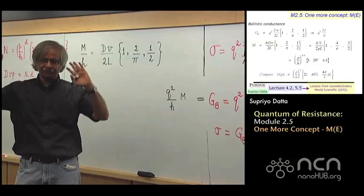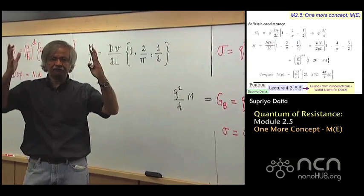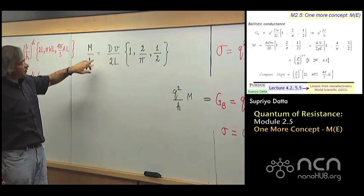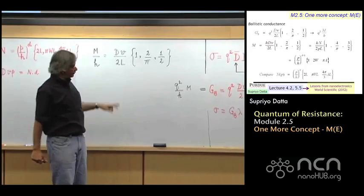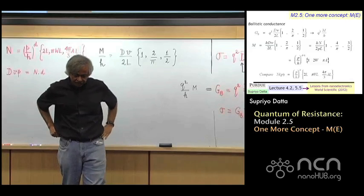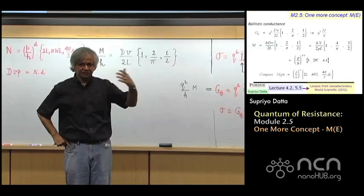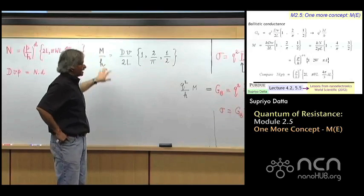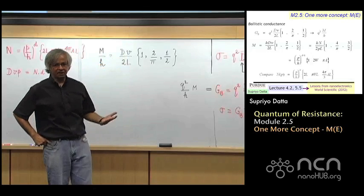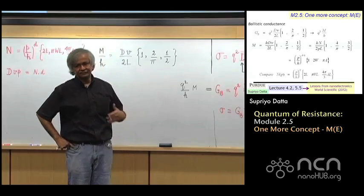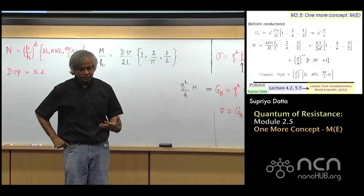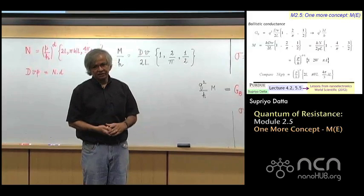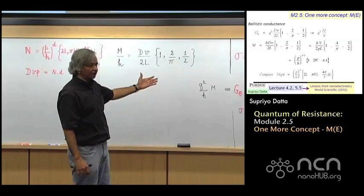The n of e, which tells you the total number of states up to a given energy, and d of e, which is the density of states. And now we are introducing a third concept, modes, m of e. And while density of states actually is a rather old concept that dates back to the earliest days of solid state physics, the concept of modes, this m of e, you won't see much before, say, 1990 or so. This is something that became popular, got to be used a lot with the rise of mesoscopic physics. That is when people started making measurements on small conductors and ballistic conductors, essentially.